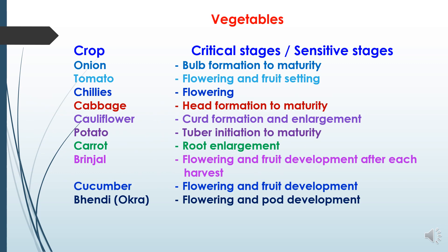Critical stages in vegetable crops: In onion, bulb formation to maturity. In tomato, flowering and fruiting stages are most critical. In chillies, flowering stage. In cabbage, head formation to maturity. In cauliflower, curd formation and enlargement stage. In potato, tuber initiation to maturity. In carrot, root enlargement. In brinjal, flowering and fruit development after each harvest are critical. In cucumber, flowering and fruit development stage. In okra (lady's finger), flowering and pod development stage.